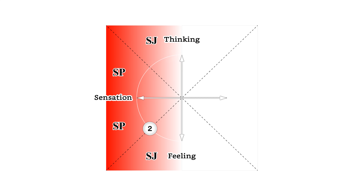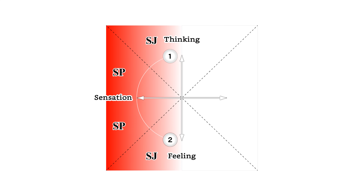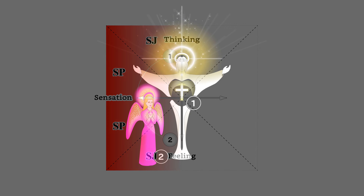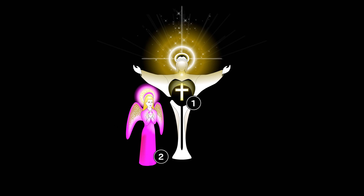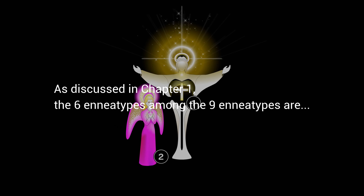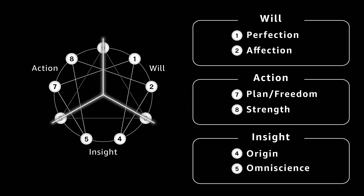Type 2 also has both SJ and SP, but statistically it is leaning toward the SJ temperament. Both Type 1 and Type 2 are super-ego types, as well as willpower types, and that is related to judging functions. As discussed in Chapter 1, the 6 enneatypes among the 9 enneatypes are divided into will types, action types, and insight types. The characteristics of will types are related to judging functions.